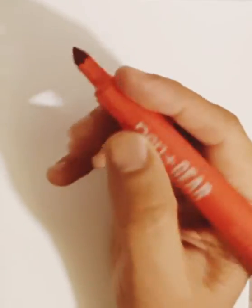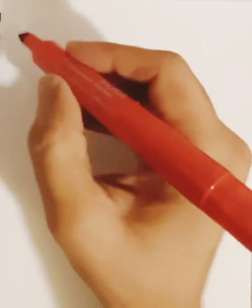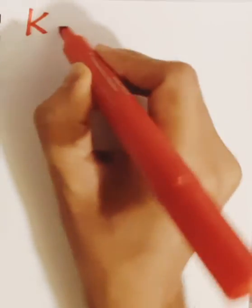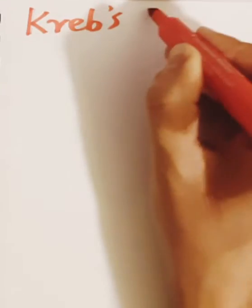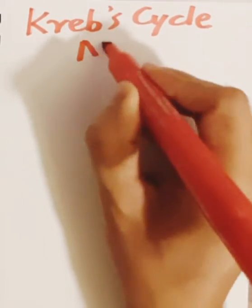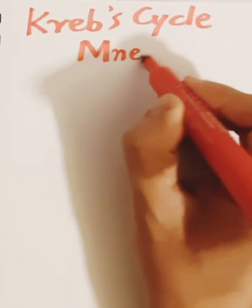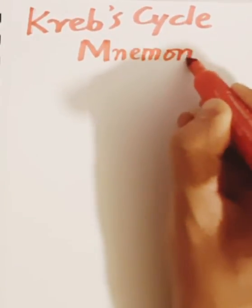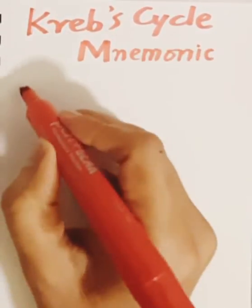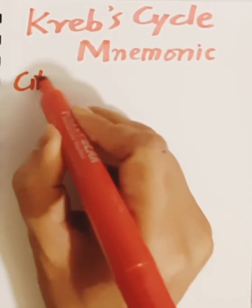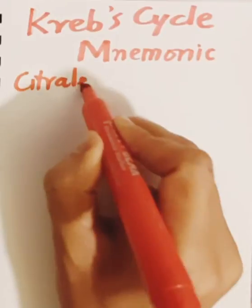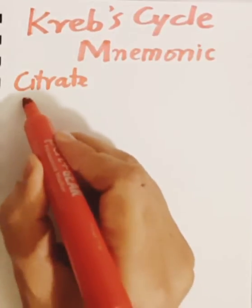How to remember the Krebs cycle, also known as the Citric Acid Cycle. We remember it by this mnemonic. Citrate is the starting substrate.